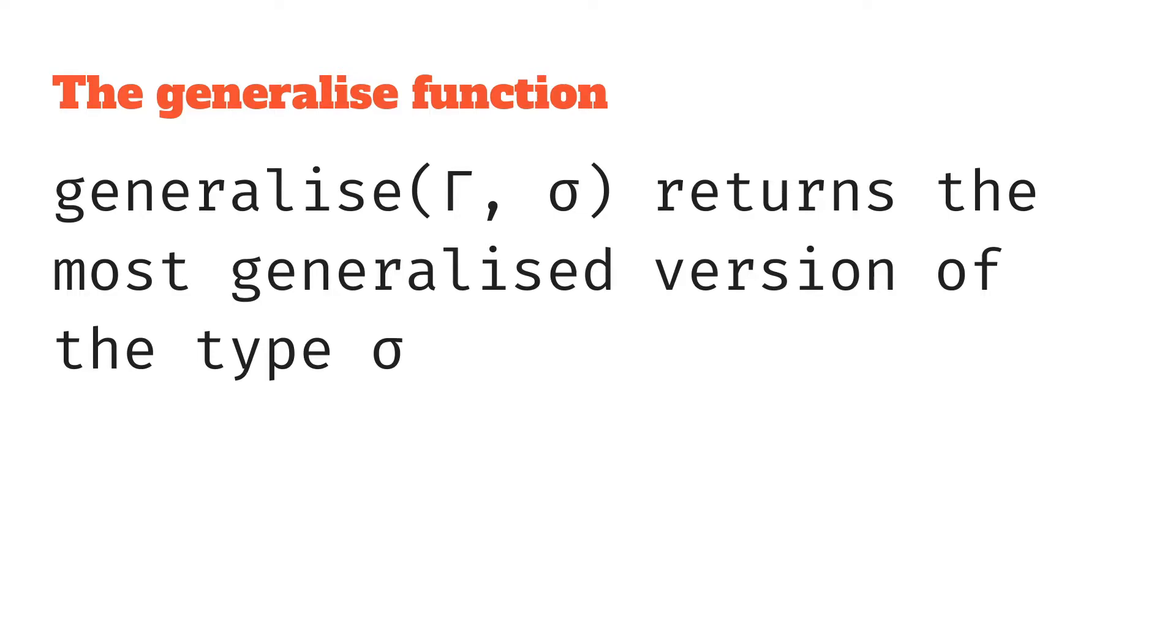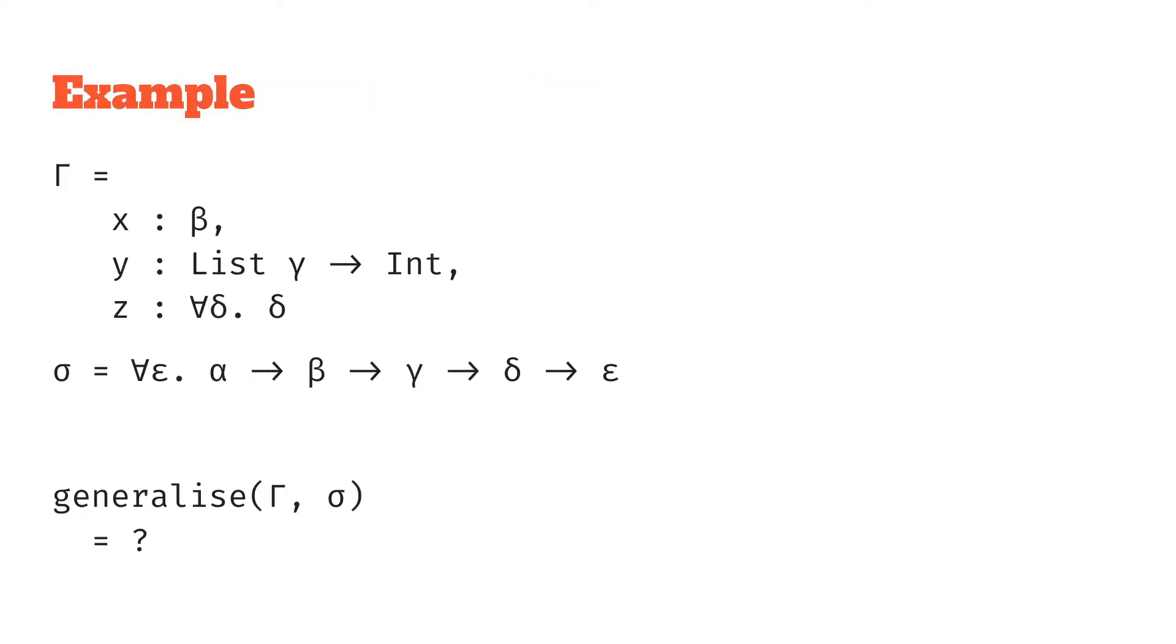So let's look at an example of that. Here we have a context gamma where we've got a few different assignments. We've got x as type beta, y has type list of gamma to int, got z as type for all delta delta, and then we've got this type sigma which is going to be for all epsilon alpha to beta to gamma to delta to epsilon. And we want to know if we generalize that type with this context what is the result. You can pause now if you want to try this yourself otherwise I will go through it.